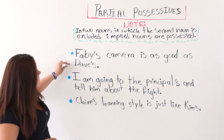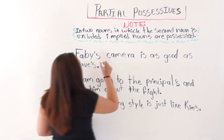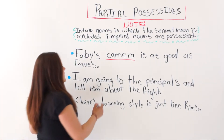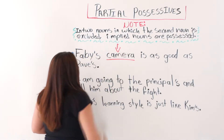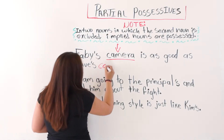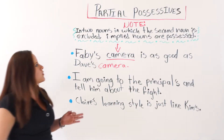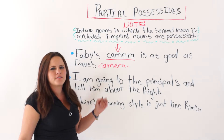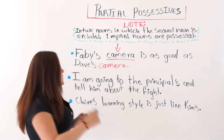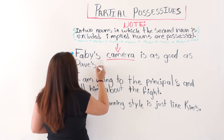The first example says: Fabi's camera is as good as Dave's. We are talking about a camera, so the implied noun is 'camera.' You could say Fabi's camera is as good as Dave's camera, but to save words, you can use partial possessives: Fabi's camera is as good as Dave's. We will know that we are talking about a camera.